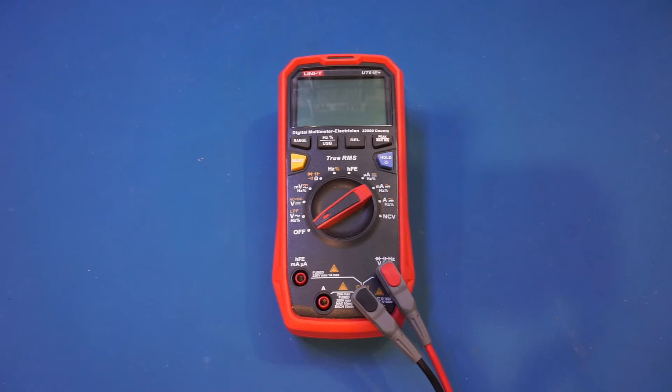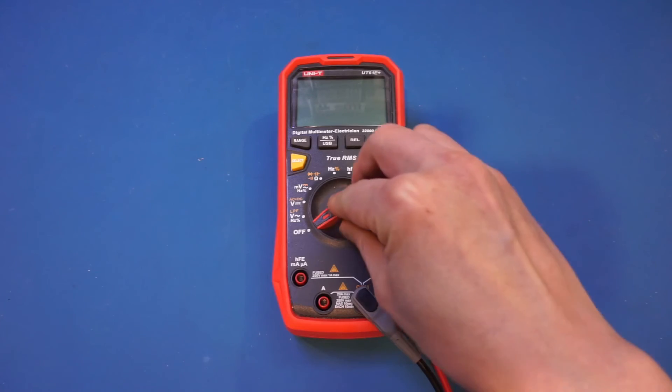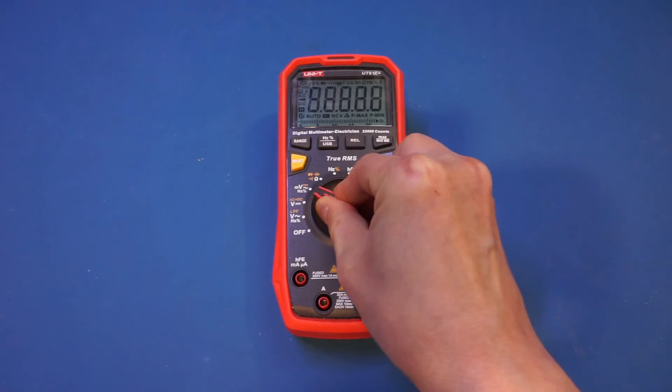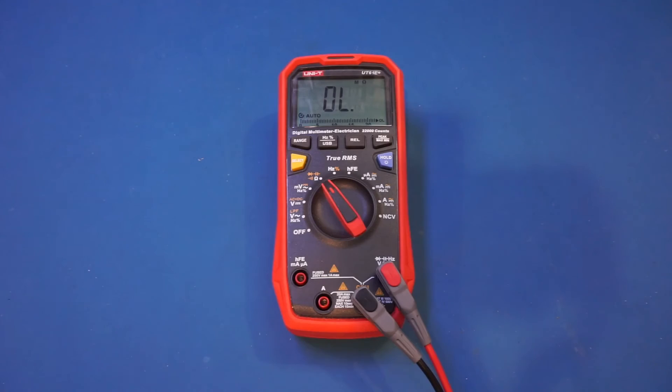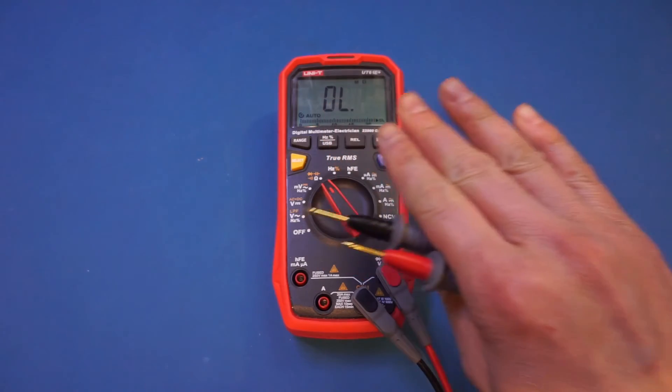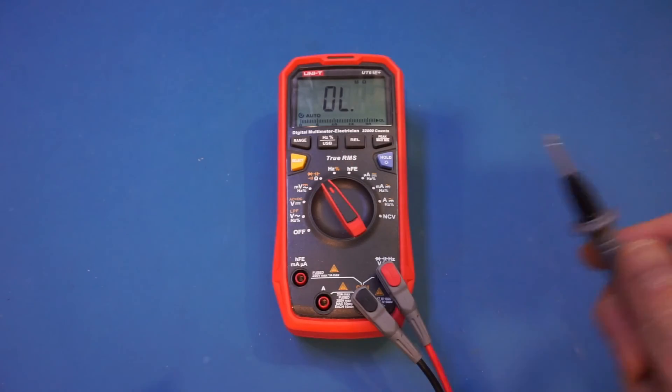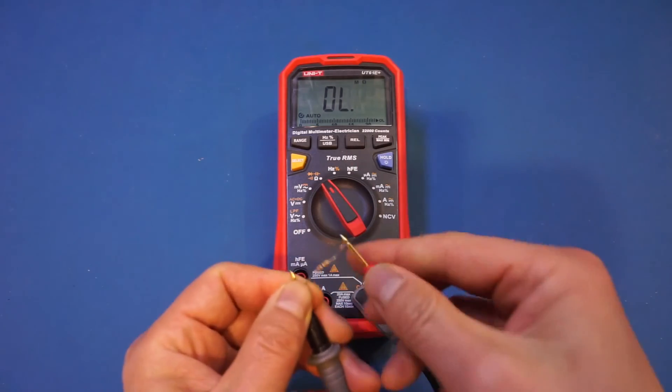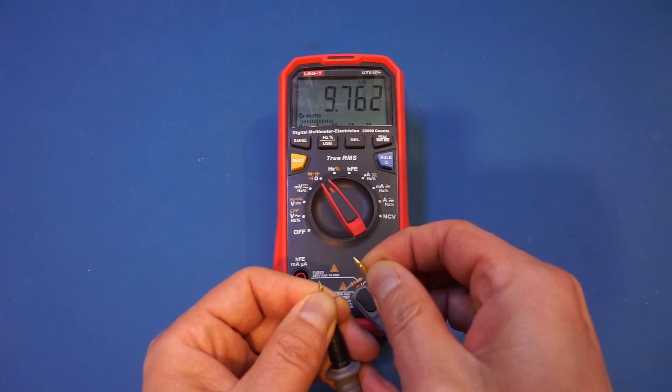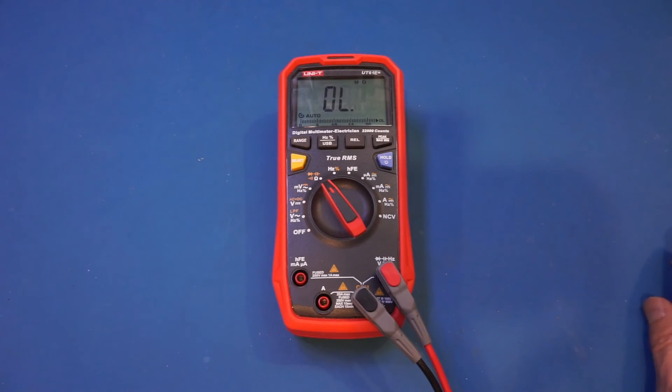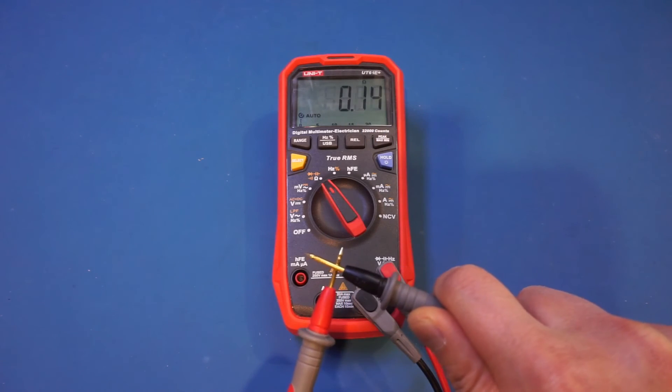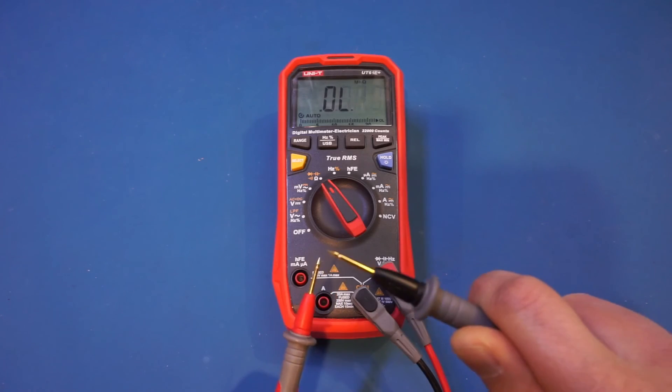And then there is measurement speed. Measurement speed is another important factor. For this reason alone, I think you will like the Unity UT61E. This is especially important when measuring resistance, and of course the UT61E is very fast in all ranges. But if you take a look at the resistance measurement range, you will see how fast this is. In fact, I mentioned this is actually faster than my BK Precision 2709B, which is already very fast. So that definitely is a very important feature if you are choosing a multimeter.